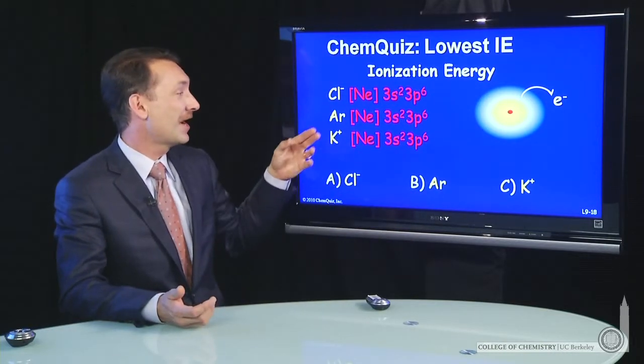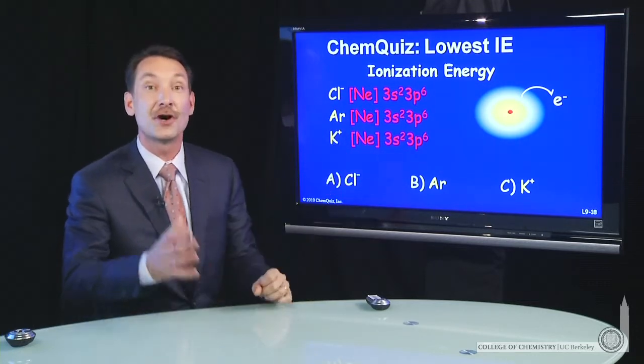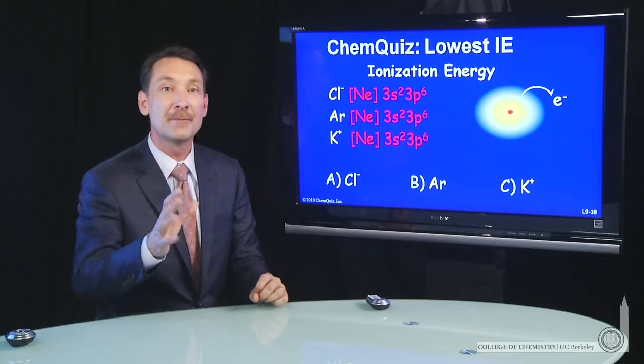Cl minus, argon, and potassium plus have the same ground state electronic configuration. They're called isoelectronic, same number of electrons.